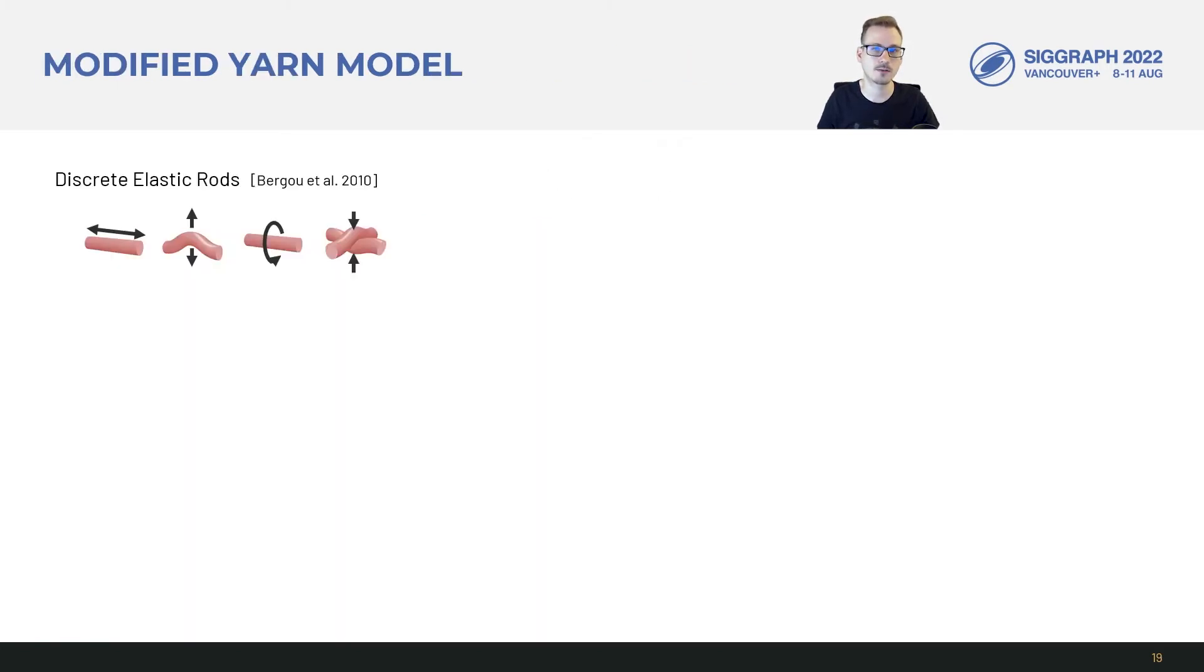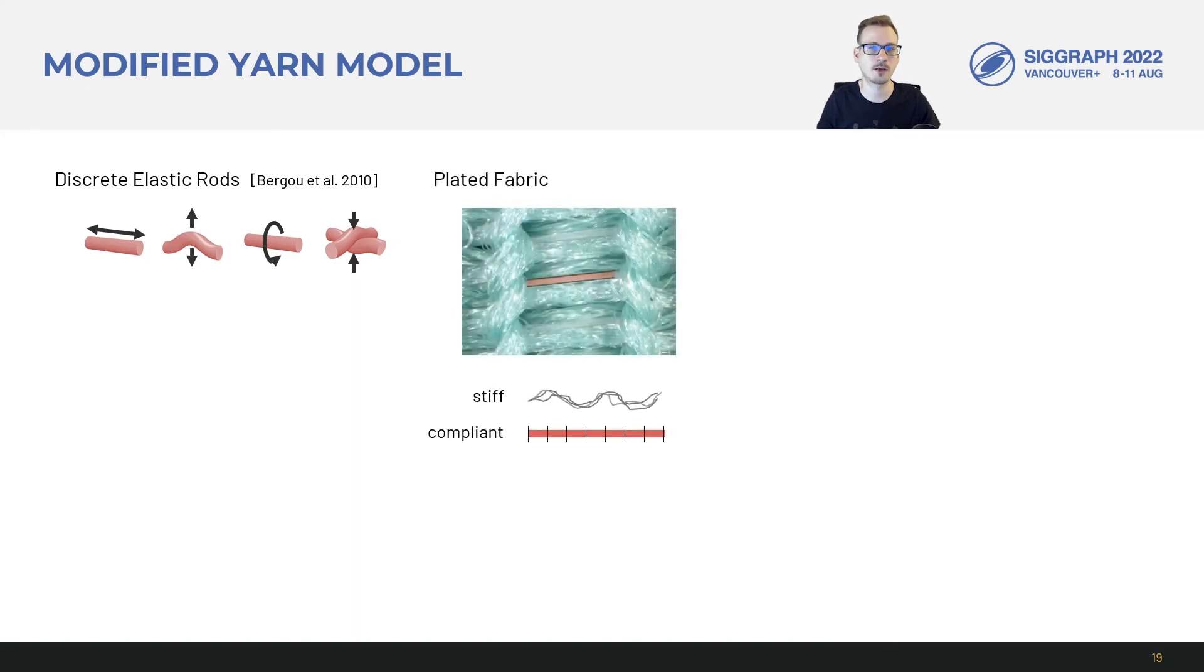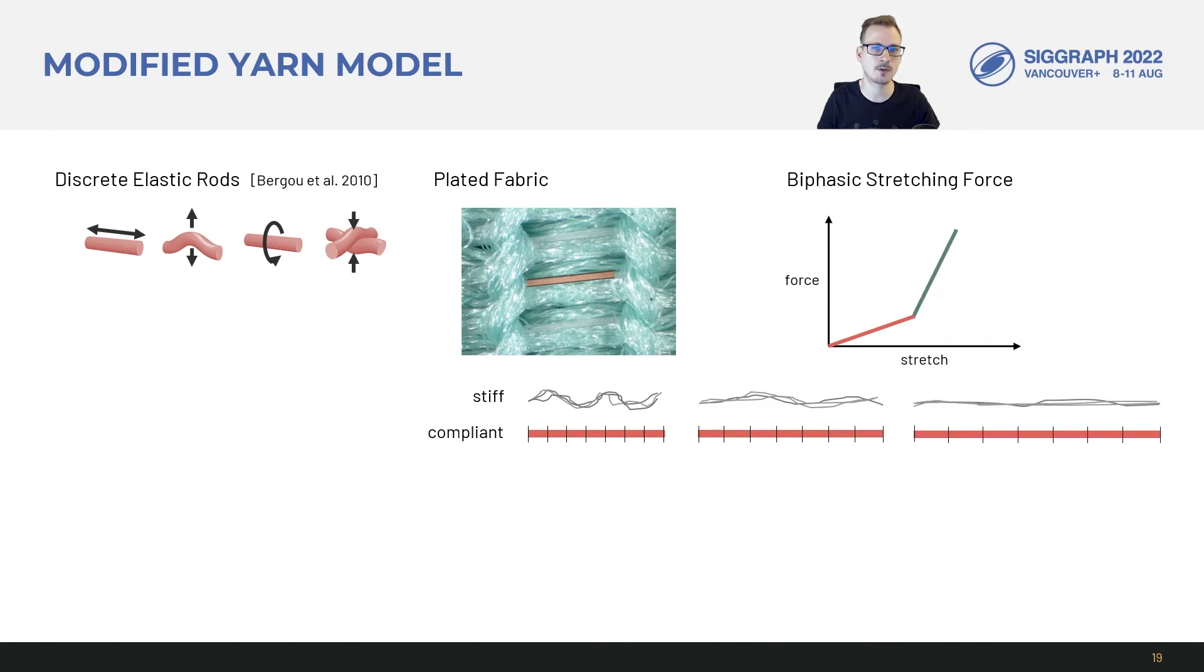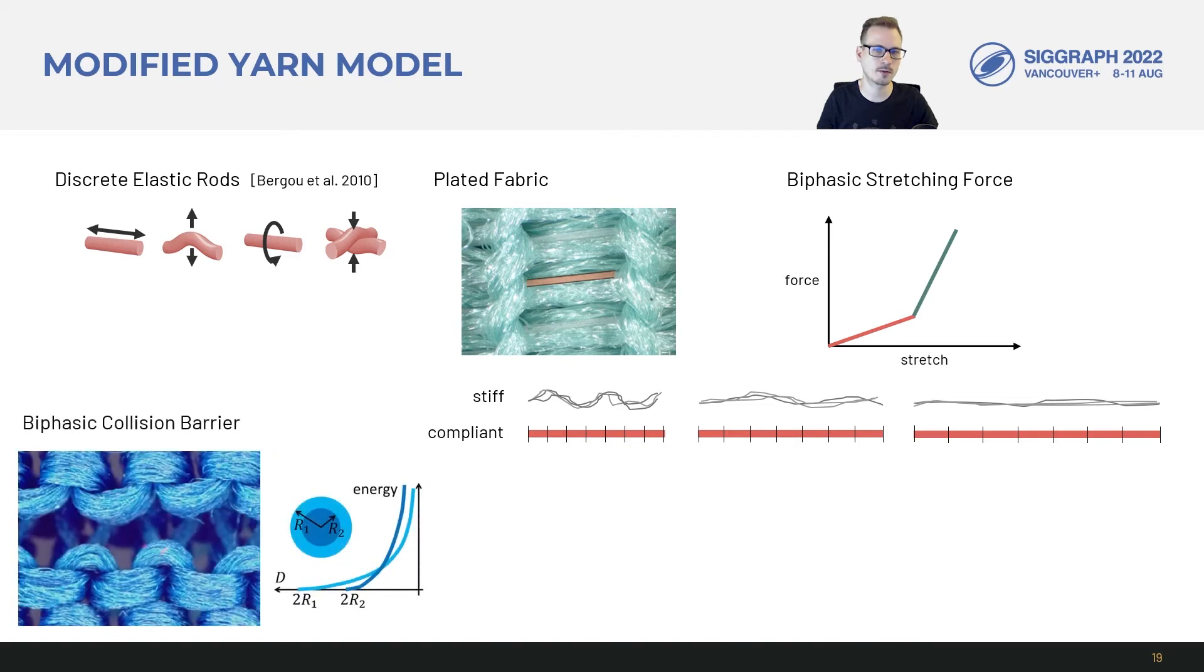We found that the standard discrete elastic rods model was not sufficient to fit our data. Motivated by the plated fabrics in our data, we added piecewise yarn stretching force. This models the distinct phases where first a stiff yarn unbuckles and we mostly have the compliant yarn stiffness, and at some point the stiff yarn is stretched and it dominates the composite stiffness. We apply a similar rationale to model contacts with an initially soft barrier for fuzzy fiber contact and a stiffer barrier at stronger compression.